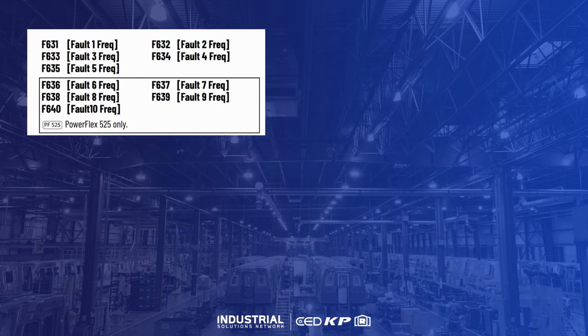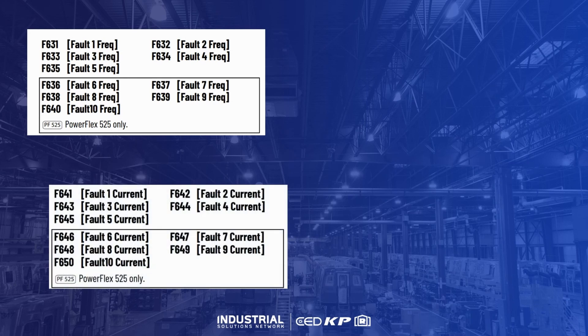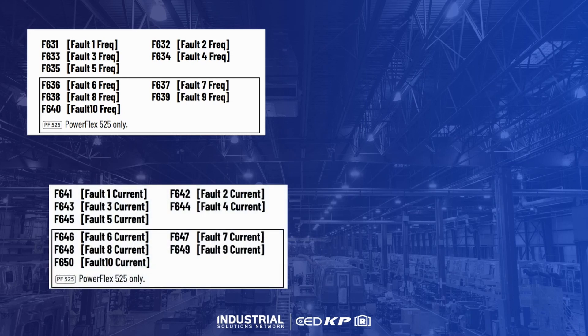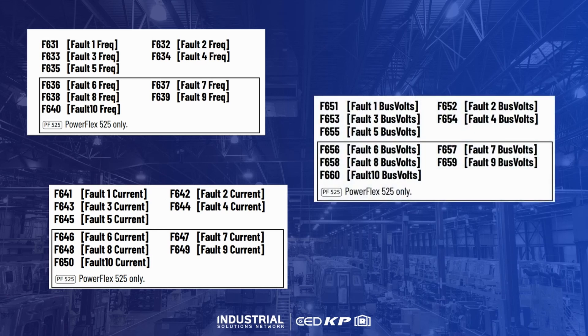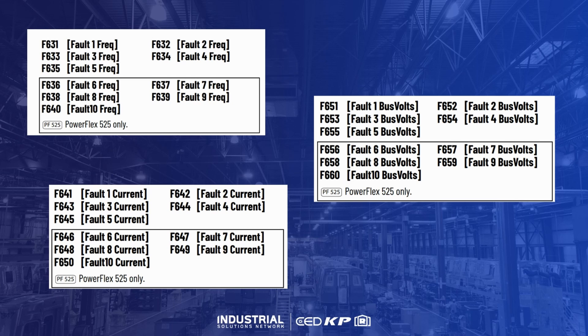Frequency data for each fault provides the drive output frequency at the time of fault. Output current, as the name implies, indicates the output current of the drive at the time of fault. And bus voltage indicates the voltage of the DC bus of the drive at the time of fault.